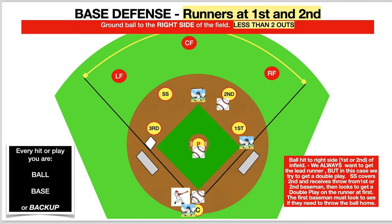Depending on the level that you're at, you might want to change how you want your players to go. At lower levels you're probably just going to try to get the out closest to second or first. The better your players get, you definitely are trying to cut that runner off at third base. Utilize this and what works for you — make sure you speak to your coaches and find out what their particular plan is or how they want it to run. Remember, everybody is moving. You're either ball, base, or backup in every scenario when you're out on the field.